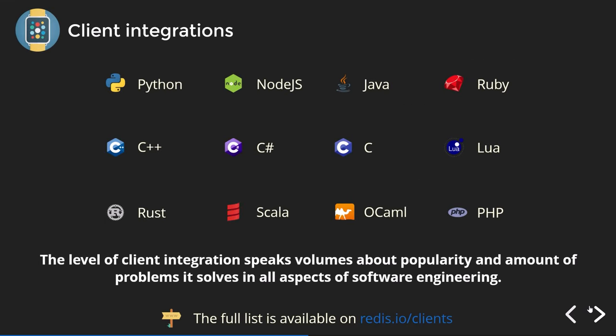Client integrations are outstanding. In terms of language support, there are libraries for pretty much any modern, actively-used language. I've personally worked with libraries for C++, Python, and Node.js, and they're perfectly fine. They offer wrappers for simple operations but also expose a low-level function where you can write the Redis command directly and execute it — which is how I usually use them, since I wouldn't expect all libraries to keep up perfectly with all Redis innovations and new commands.